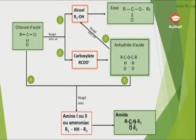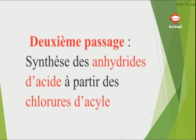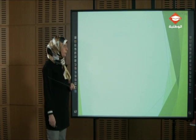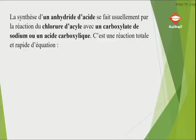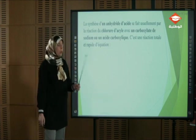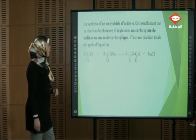Deuxième passage — synthèse des anhydrides d'acide à partir des chlorures d'acide. On va partir du chlorure d'acide qui va réagir avec l'ion carboxylate pour donner l'anhydride d'acide. La synthèse des anhydrides d'acide se fait usuellement par la réaction de chlorure d'acide avec un carboxylate de sodium ou un acide carboxylique. Tous les deux contiennent l'ion carboxylate. C'est une réaction totale et rapide.